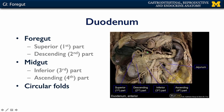From the pyloric part, chyme enters the duodenum. The duodenum has four parts: the superior or first part, the descending or second part, the inferior or third part, and the ascending or fourth part. Roughly, the duodenum looks like an exaggerated C, and it's found in close association with an accessory organ of digestion known as the pancreas.